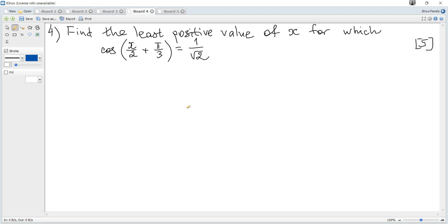Find the least positive value of x for which cosine of (x/2 + π/3) is equal to 1 over root 2.